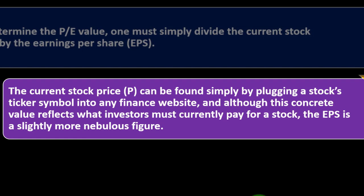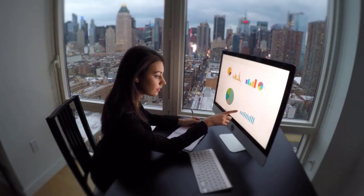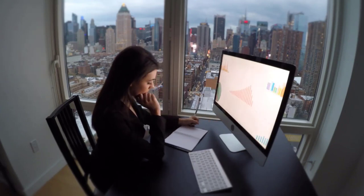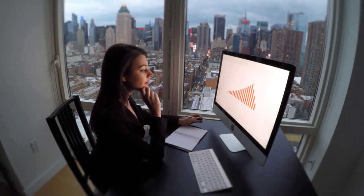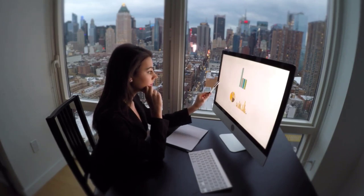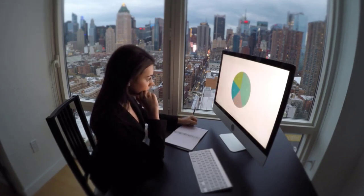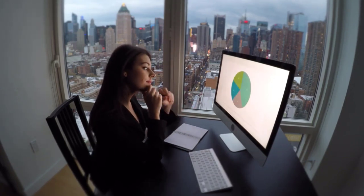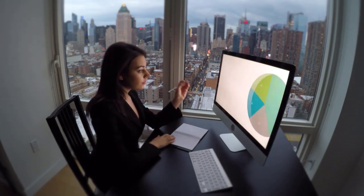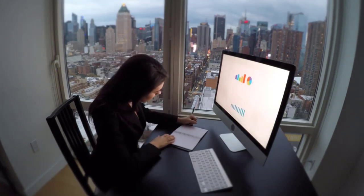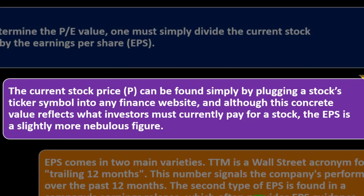The current stock price can be found simply by plugging a stock's ticker symbol into any finance website. Although this concrete value reflects what investors currently pay for a stock, the earnings per share is a slightly more nebulous figure. The stock price is determined by the stock market. Stocks are uniform in nature — a corporation is a separate legal entity that breaks ownership into equal units of stock, typically traded on an exchange for publicly traded companies. If another identical stock is trading at the same price, we can use the market to help determine value.